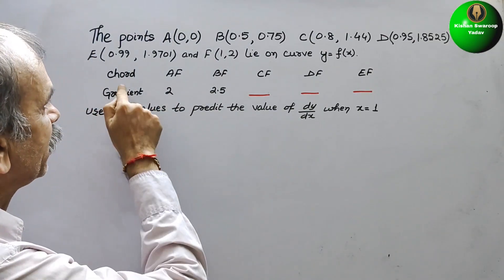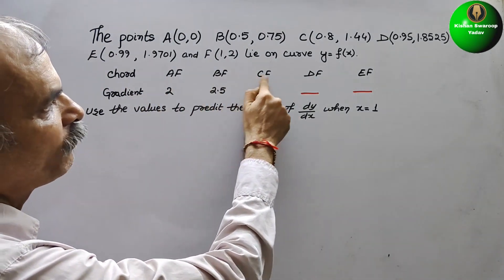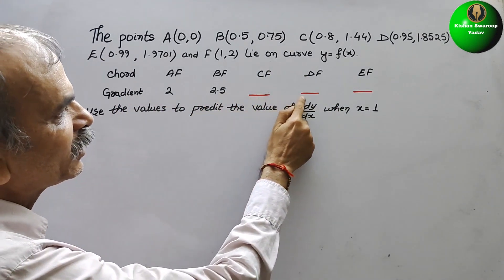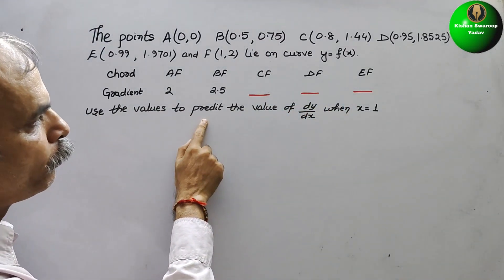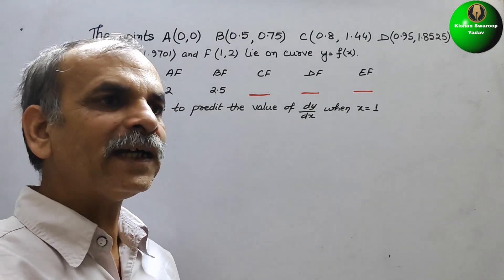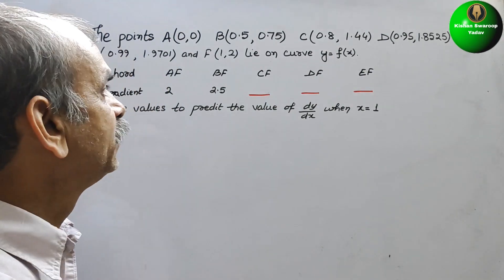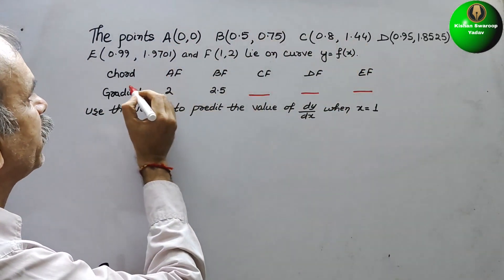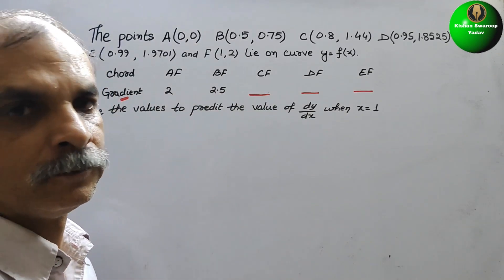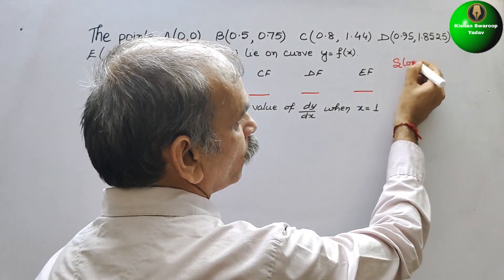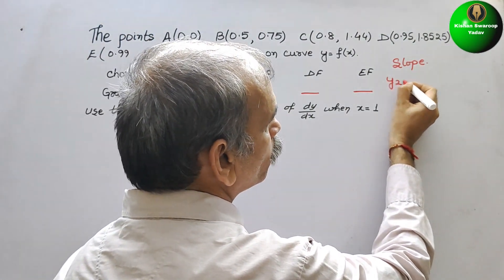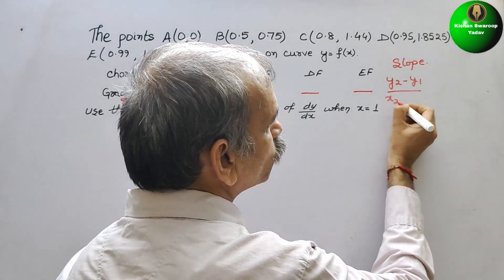They have given a table. Here, it is the chords AF, BF, CF, DF, and EF. They have given the gradients: 2, 2.5, and dashes for the rest. Use these values to predict the value of dy/dx when x is equal to 1. By these points, we have to find the gradient. Gradient is nothing but slope, and the formula for slope is y2 minus y1 divided by x2 minus x1.